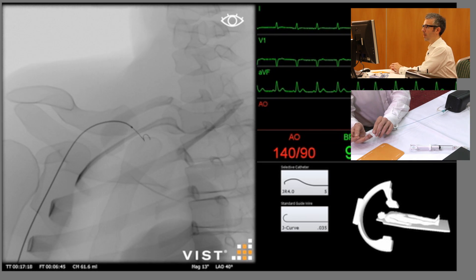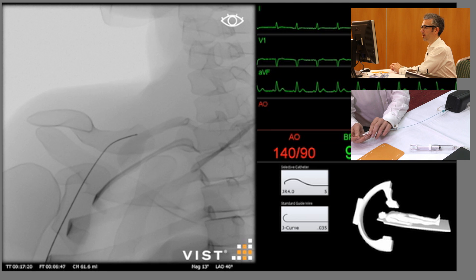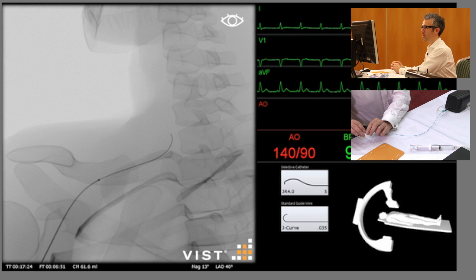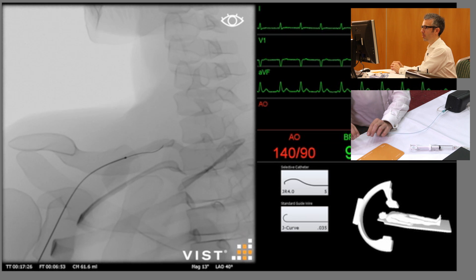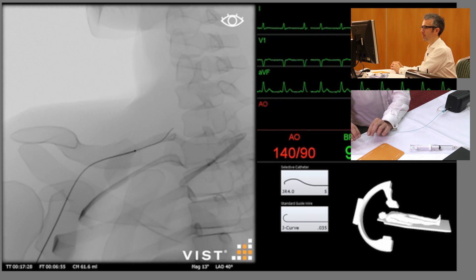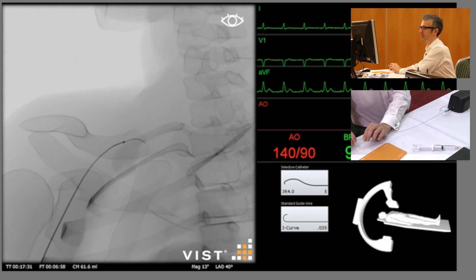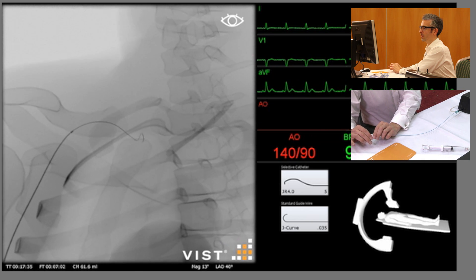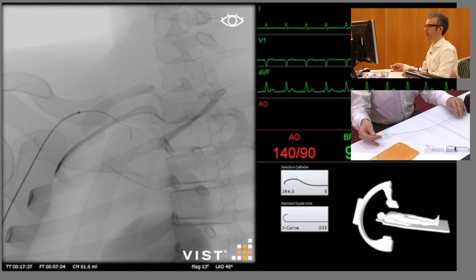We've got a little bit of resistance with our wire there so I'm just going to come back with the wire, try and redirect. That's heading towards the head and neck vessels. So again we bring the wire back, back a little bit further and redirect our wire. Quite a tortuous subclavian here by the looks of things.